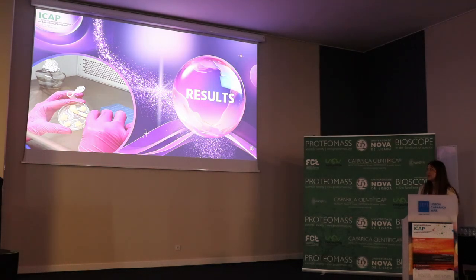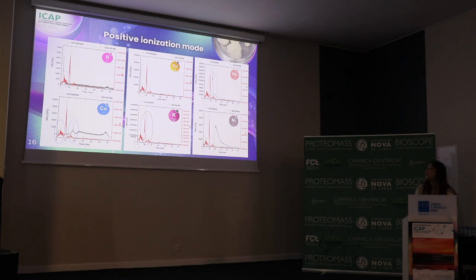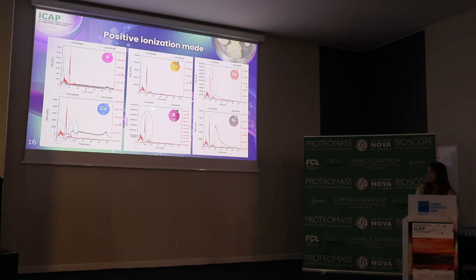Now some results involving the soybean callus. Here I have chromatograms from both techniques — ICP-MS in black and the Orbitrap chromatogram in red — for boron, copper, sodium, cobalt, potassium, and nickel. In some regions of the chromatograms we have overlapping peaks, so at these retention times we can potentially identify biomolecules containing the heteroatoms.